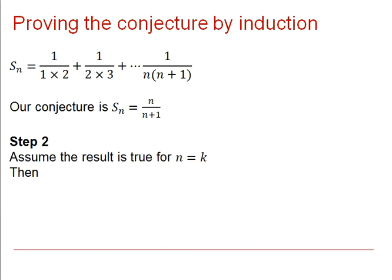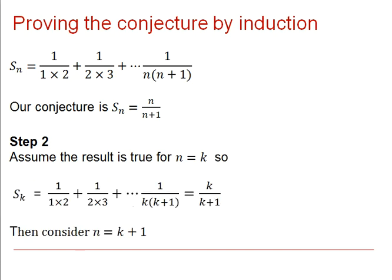Moving on to step two, we will assume that the result is true for n equals k. In other words, what we're saying is that Sk equals k over k plus 1. That is what we are assuming. If you were doing a particular question, you may wish to write it out slightly more in full.